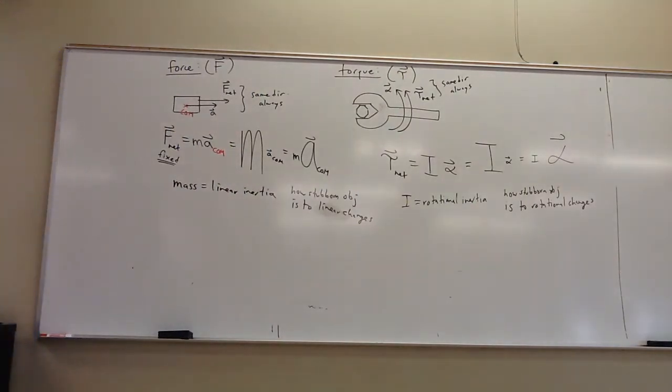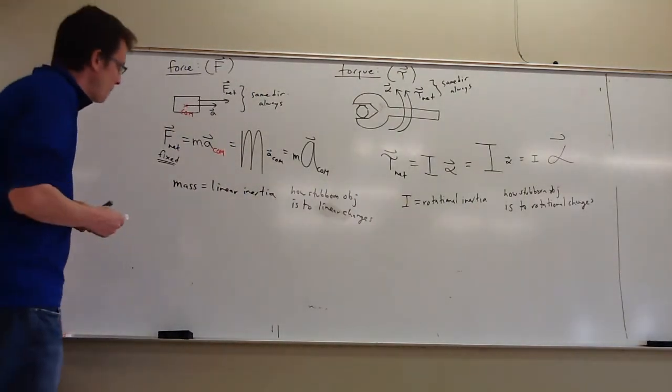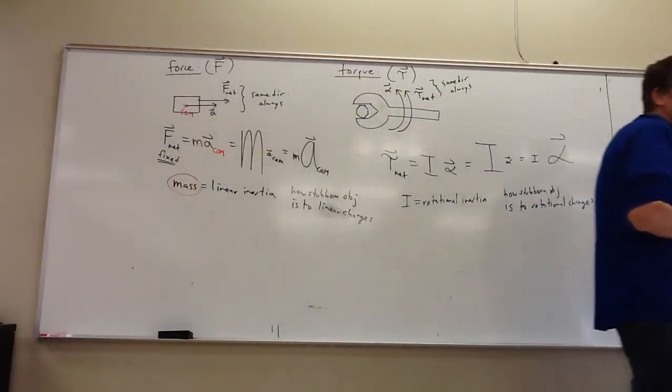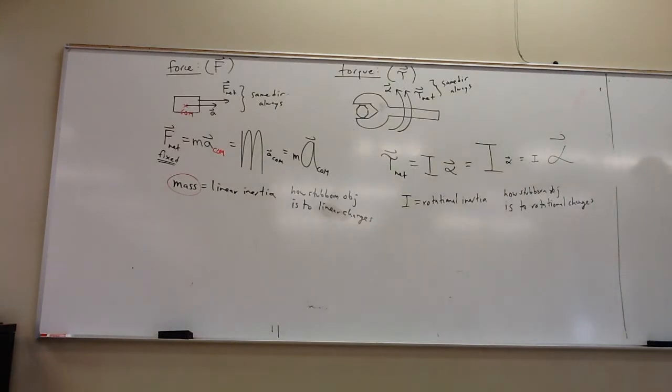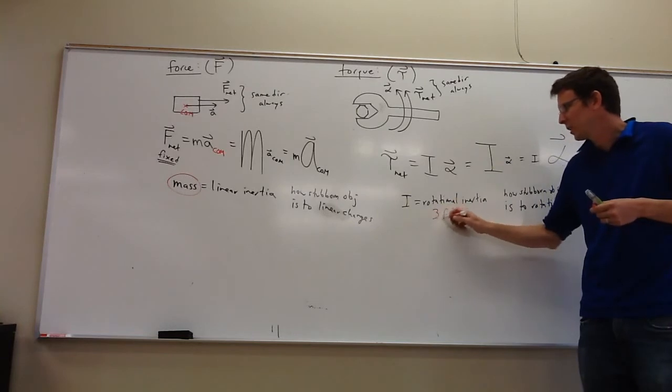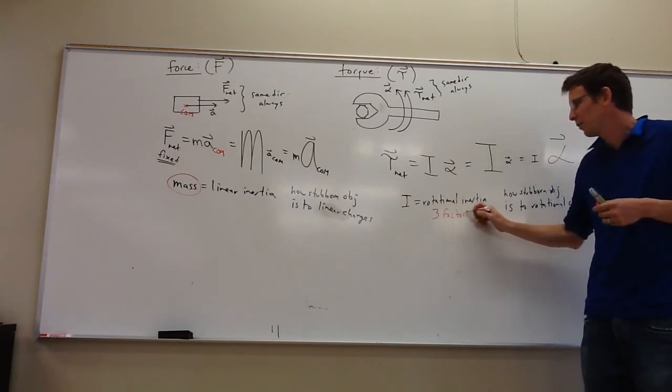Now, here's what makes this difficult. Mass is linear inertia. If you want to know how stubborn something is to linear changes, you need to know about one physical property of it, which is its mass, and that's it. That's where the story begins and ends. Rotational inertia has no less than three different factors that go into it.